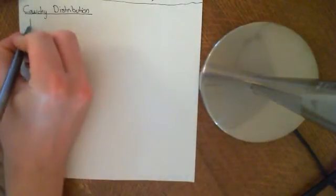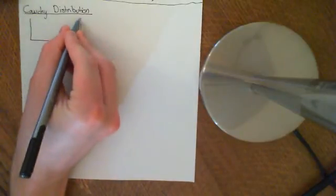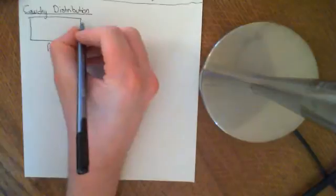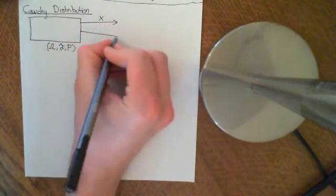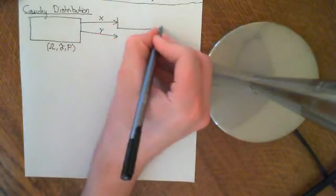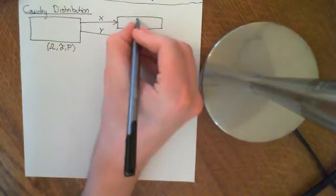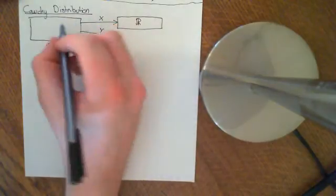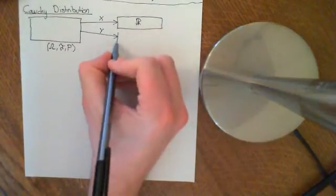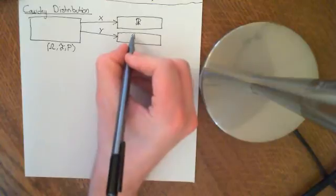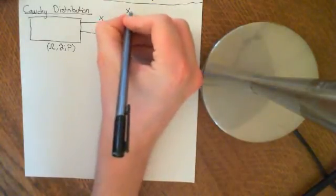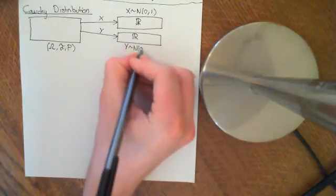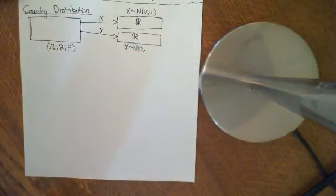The starting point for the derivation of the Cauchy distribution is an abstract probability space with two random variables defined on it. We have two random variables X and Y, both ascribing each outcome a real number, mapping you onto the entire real numbers. Both of these are going to be standard normally distributed — normally distributed with mean zero and variance one. Y is also standard normally distributed with mean zero and variance one.